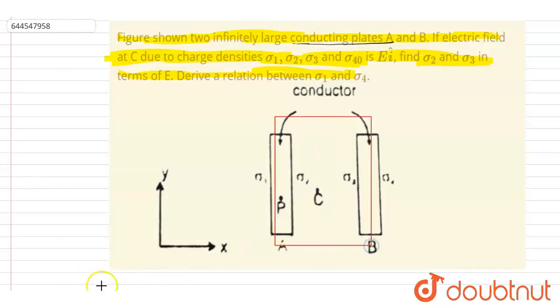any point inside the conductor at steady state, the electric field will be zero. If you see, this is point P and this is point Q. At point P and at point Q, the electric field should equal zero. From Gauss's law,